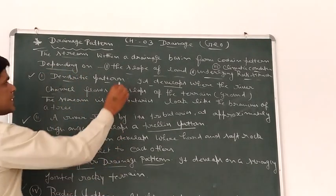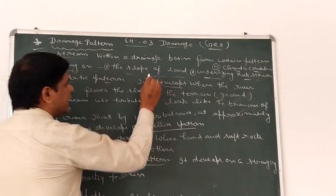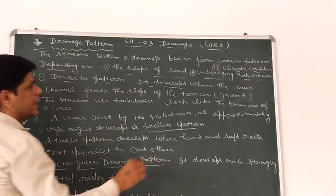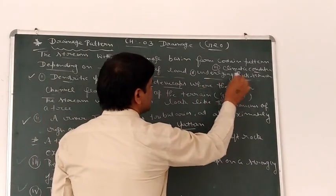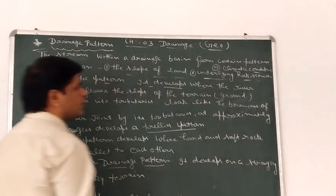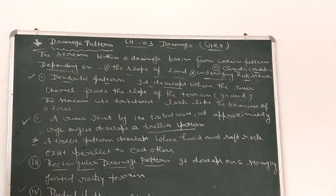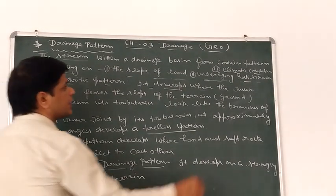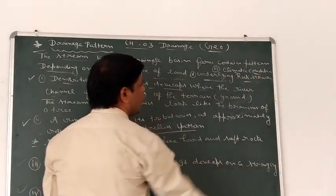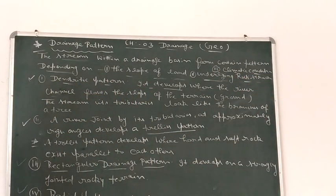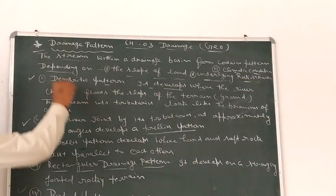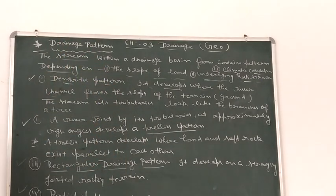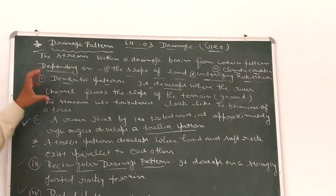The first is the slope of land. What is the slope of the land? Second is underlying rock structure, meaning what kind of rock structure or bedrock the area is made of. And the third factor is climatic condition of that area. These factors determine the drainage pattern.